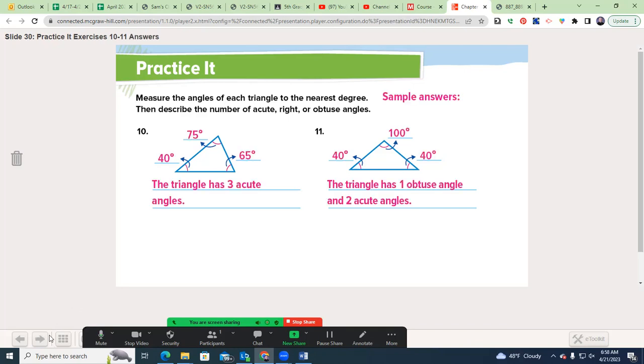Go ahead and try numbers ten and eleven and pause the video now. Welcome back. You see that we've got forty, seventy five and sixty five, so three acute angles. This one has one obtuse and two acute. By definition, because they have to equal 180, once you have an obtuse triangle the other two have to be acute. Same as if you get a right triangle, the others have to be acute.